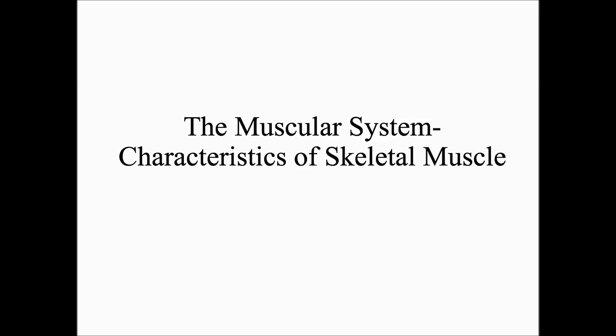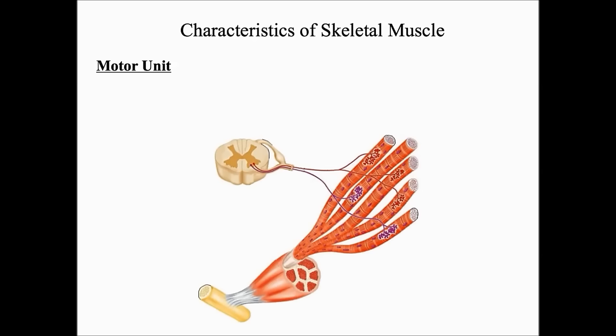In this lecture of the muscular system, we're going to talk about the characteristics of skeletal muscle. First, we have to remember that muscle is a unique tissue. What makes muscle tissue unique is that it has the ability to contract or shorten in length when stimulated by an electrical impulse.